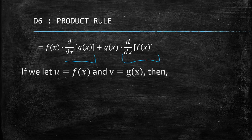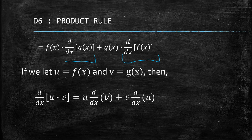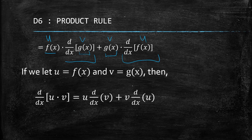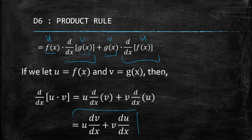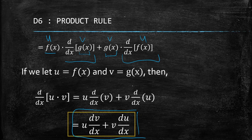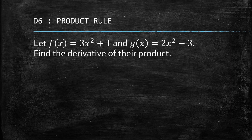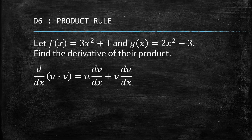Those limits give us the derivative of g(x) and the derivative of f(x). If we let f(x) = u and g(x) = v, we get back to our original formula: u·dv plus v·du. That is how we prove the product rule. Now let's proceed to the example: f(x) = 3x² + 1 and g(x) = 2x² − 3. We are asked to find the derivative of their product, using d(uv) = u·dv + v·du.